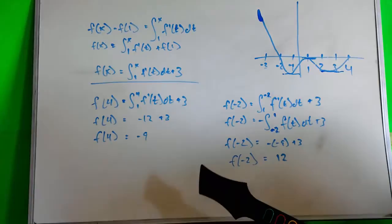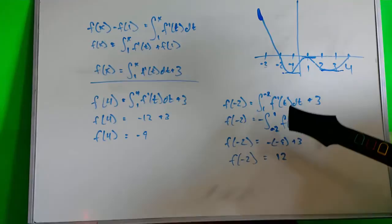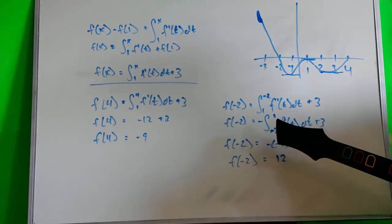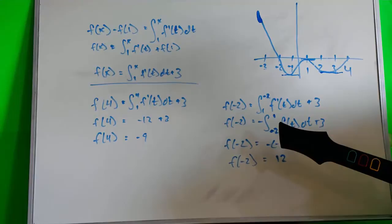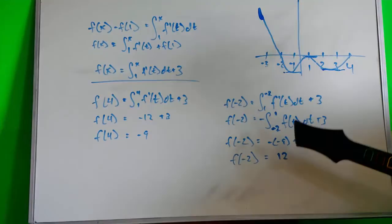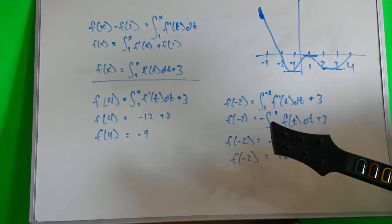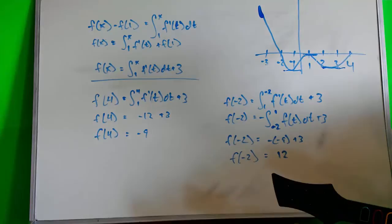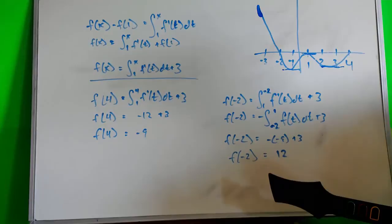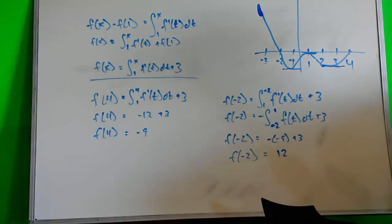And lastly, for f of negative 2, you do the same thing you did for positive 4. And then you have to reverse because you have from 1 to negative 2, and you switch that to get it from negative 2 to 1, you get a negative. You get the negative integral from negative 2 to 1 of f prime of t dt plus 3. And then you plug in the negative 2, and then you get negative 9, which becomes positive because you have to flip it, because of how it tells you in the first given. Then you get f of negative 2 equals 12.